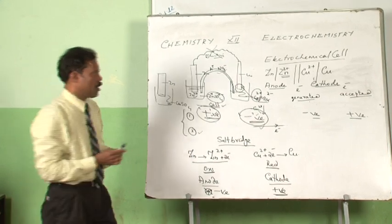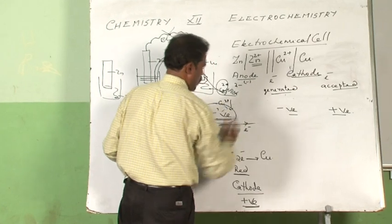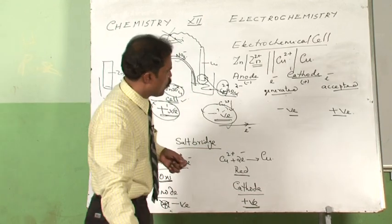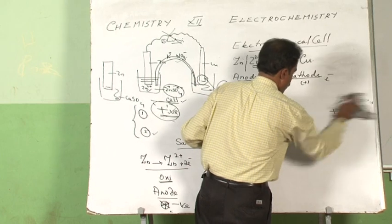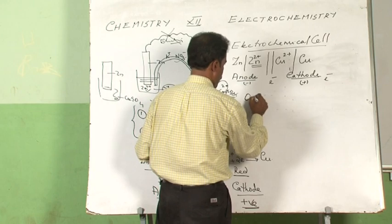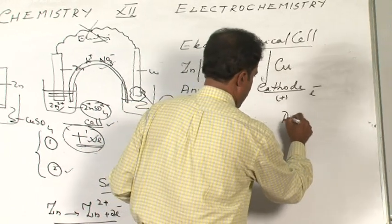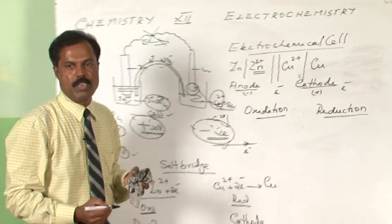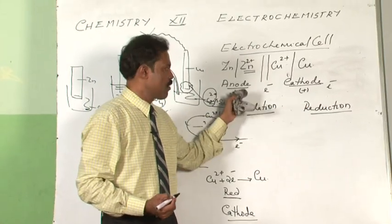The left hand side should be the negatively charged electrode because the anode is negatively charged. The right hand side should be the positively charged electrode because that is the cathode. In another way, the left hand side should be the electrode where oxidation takes place, and the right hand side should be where reduction takes place. One can easily remember this by remembering that on the right hand side we have reduction and on the left hand side we have oxidation.